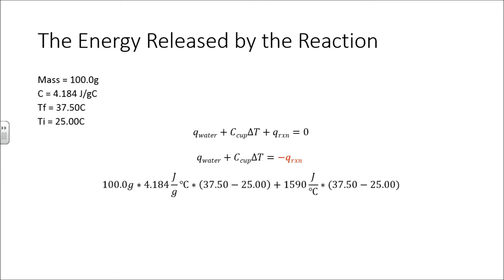So, plugging in, 100 grams times its specific heat, times the temperature range, plus 1590 energy for the heat that is gained by the cup, times its temperature range, comes out to 25,105 joules, and that's equal to the heat lost during the reaction.